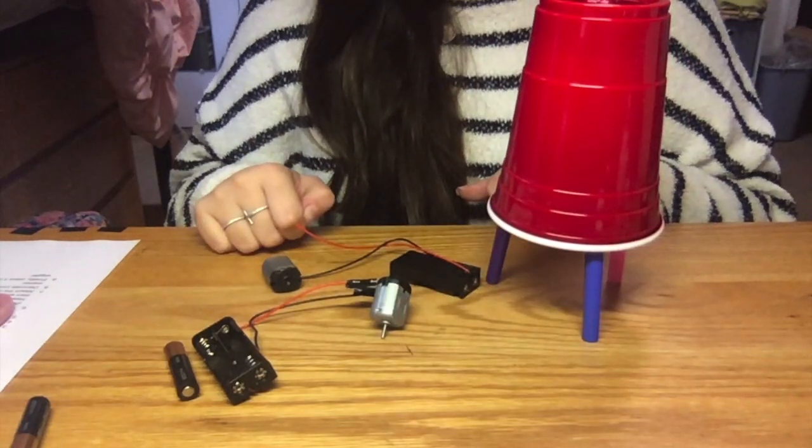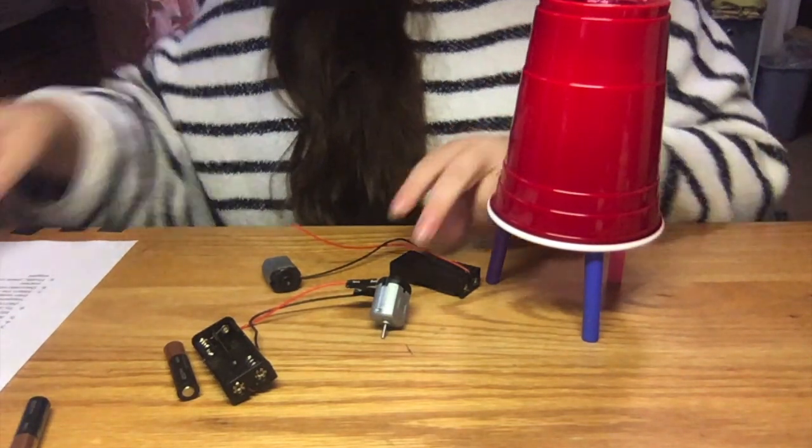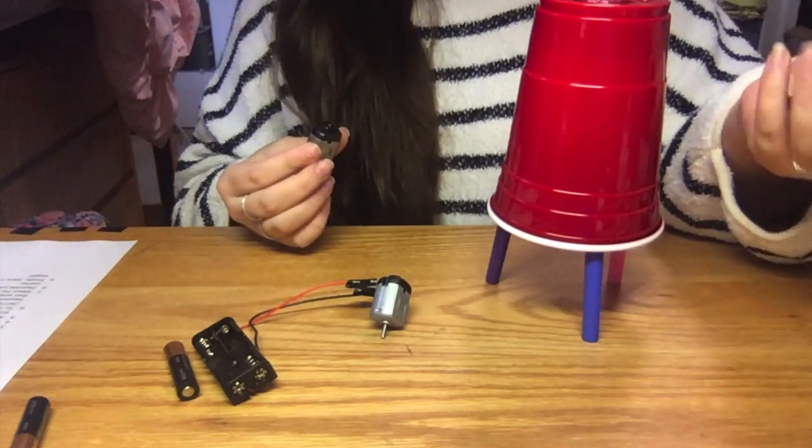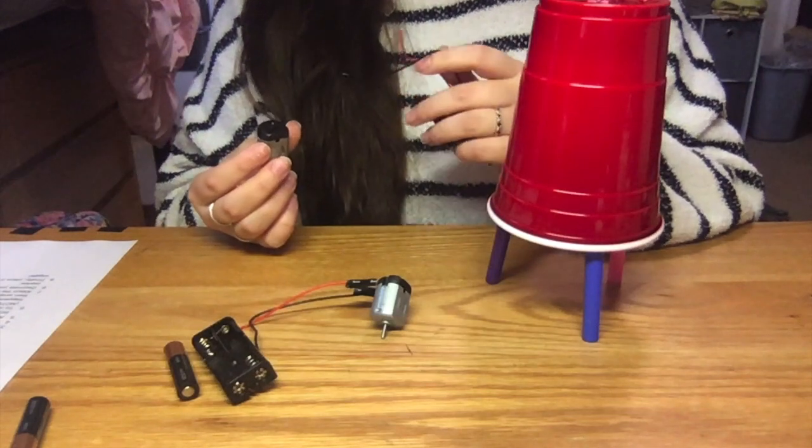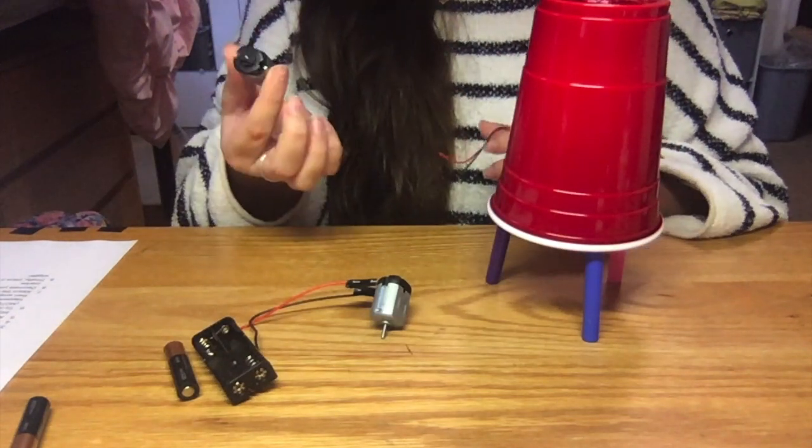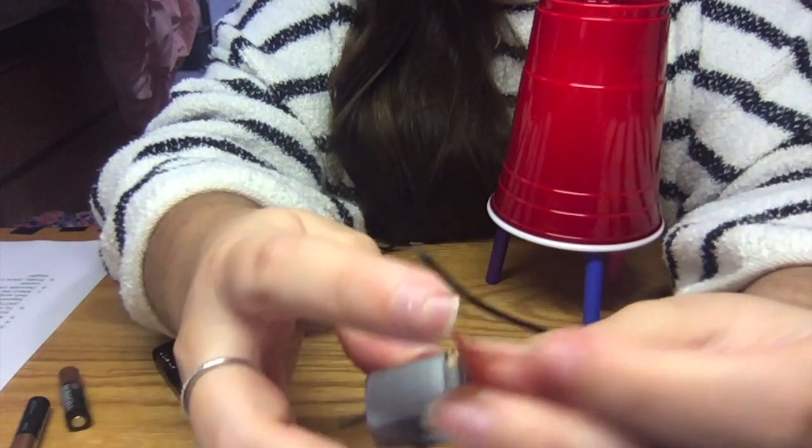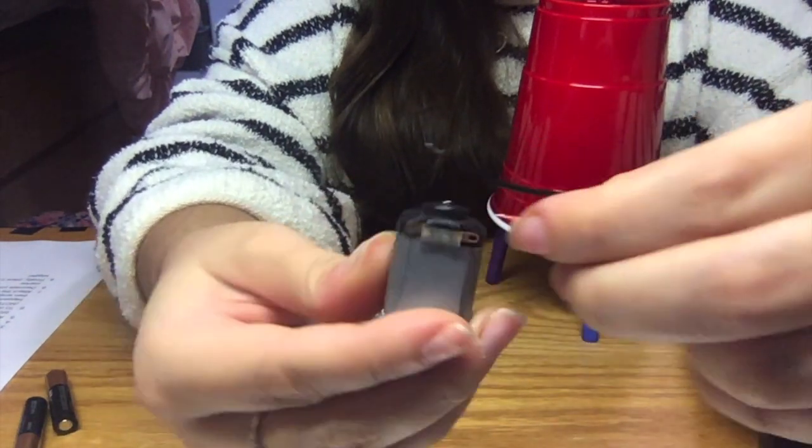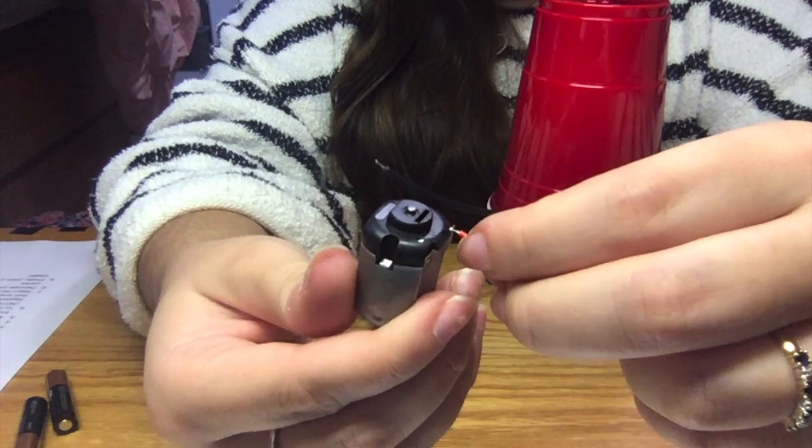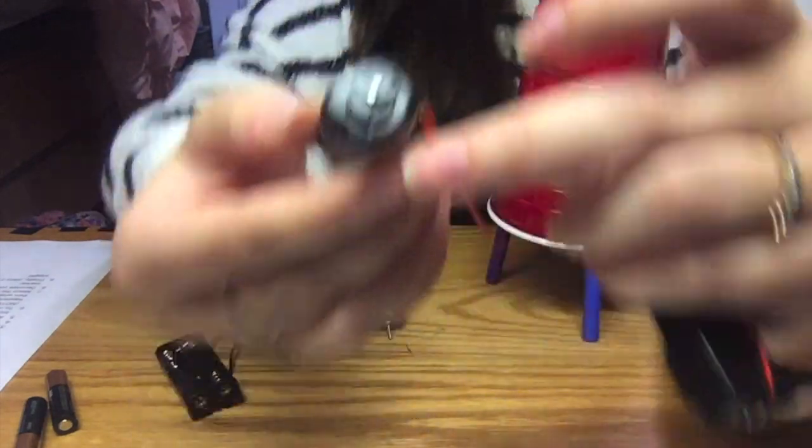Okay, so this next step is probably going to require some parents' help. So you're going to want to connect your AAA battery holder with your DC motor, and by doing that you're going to wrap the ends of these wires right here to the holes, the openings that are right here. You're going to wrap those around.